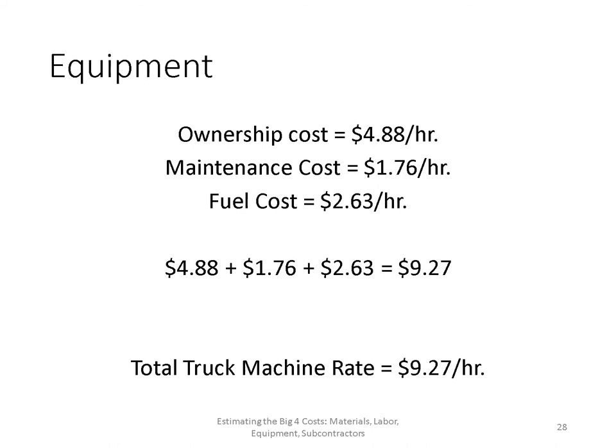Adding the three cost components together: ownership cost $4.88/hr, maintenance cost $1.76/hr, and fuel cost $2.63/hr gives a total truck machine rate of $9.27 per hour. Anytime the truck is being used on a job, multiply the hours of use by $9.27 to account for its cost.